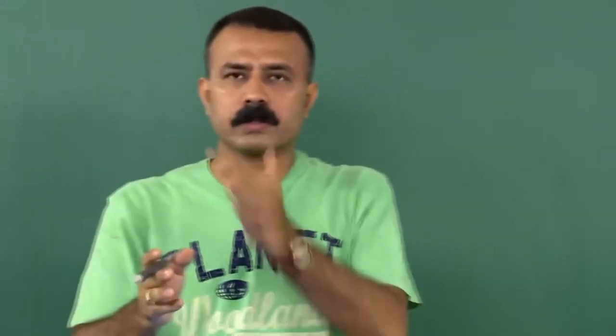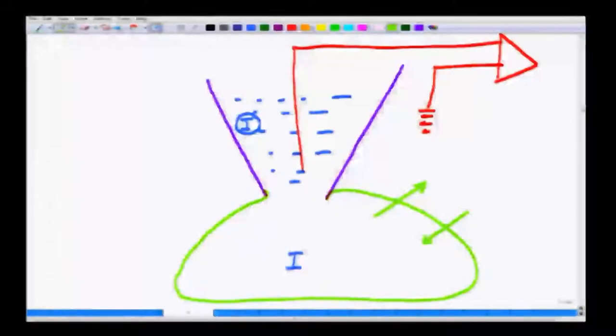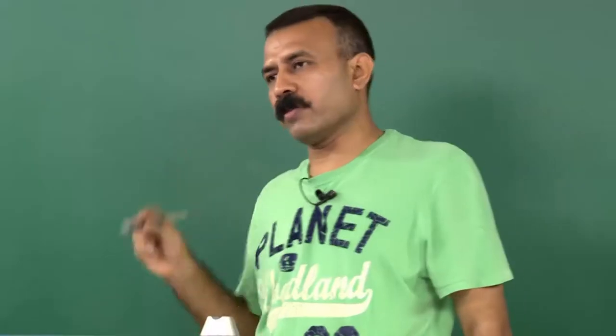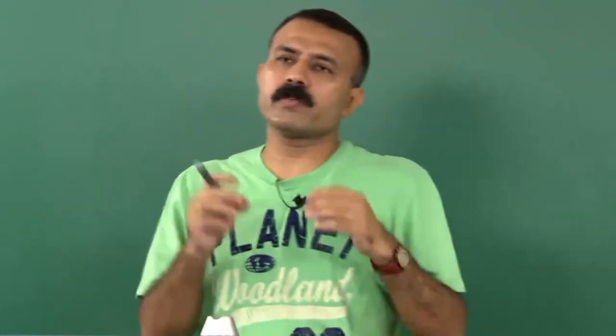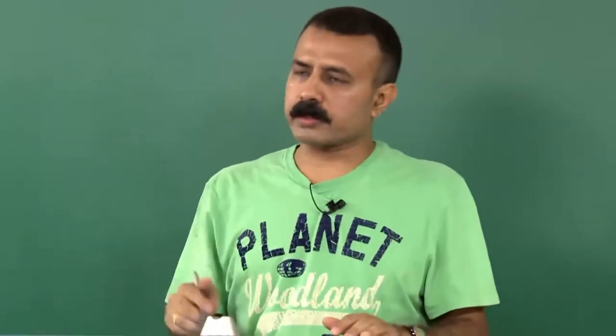Whatever current is either moving out or inside the cell through these ion channels can now be recorded. This is the first and most important configuration to understand whole cell electrophysiology. You can hold the membrane at different voltages and measure the current, or you can inject a finite amount of current inside the cell and measure the voltage.